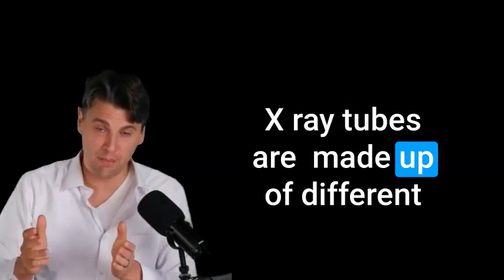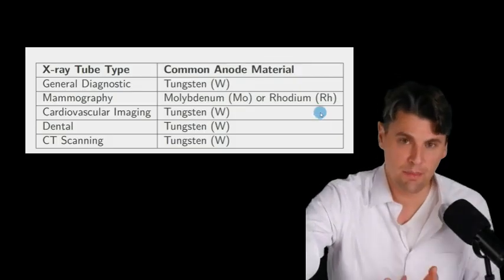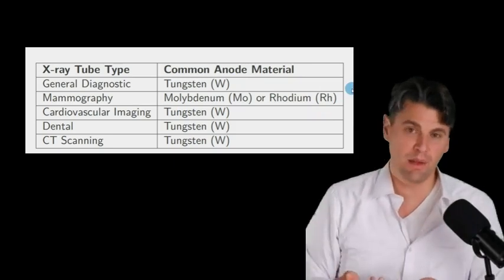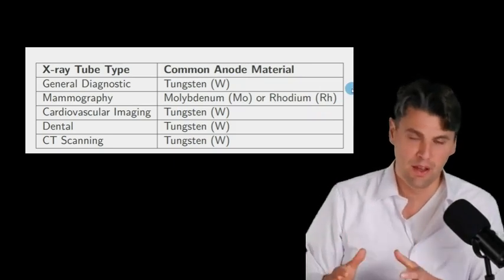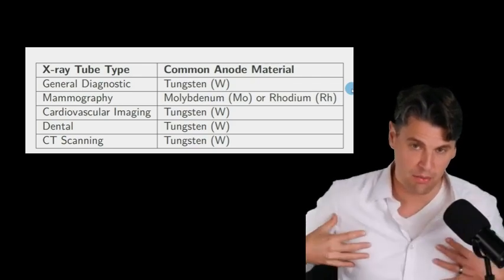X-ray tubes are made up of different heavy metals for the anode. Tungsten is the most popular one. But molybdenum and rhodium also can be used for mammography, where you have a smaller breast that you're imaging compared with the whole body.